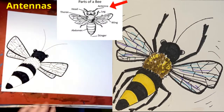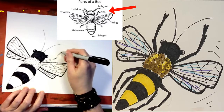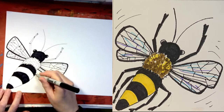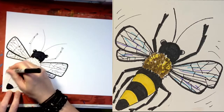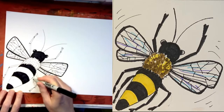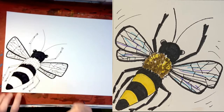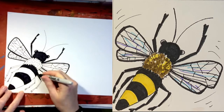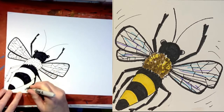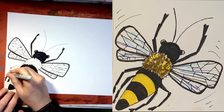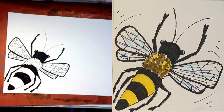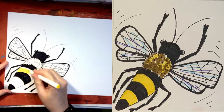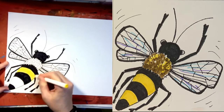Draw the antennas by drawing two lines that are somewhat curved. Now draw the legs. The honeybee has three pairs of legs which split into six segments, making them very flexible. The front legs are specially designed to clean the antenna, and the rear legs have a section devoted to pollen accumulation called a pollen basket. Bees also have taste receptors on the tips of their legs. Notice how I'm drawing the bee's legs in three different sections.